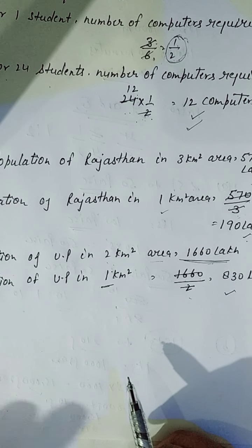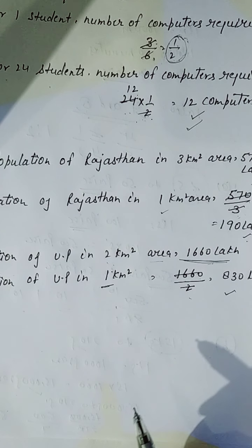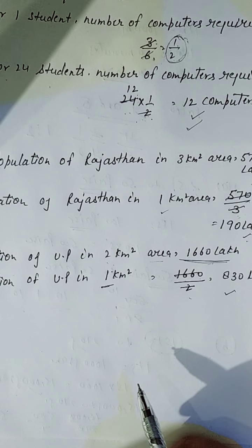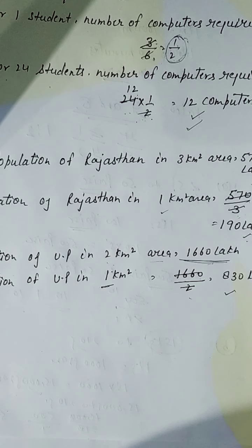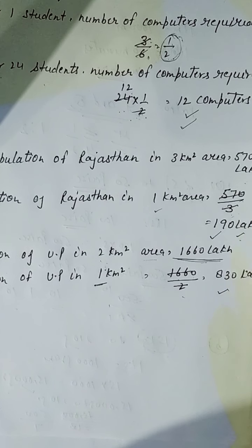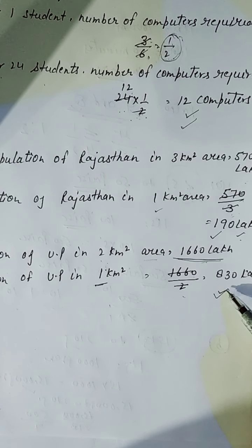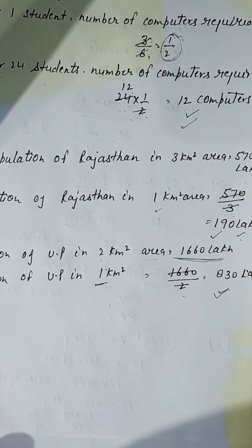Aap aata hai next, iska point kya tha? Which state is less populated? Aap sabse kam populated kaunsa hai? Dekhiye, aapke samne hi hai. Kis mein hai? Dekhiye, kilometer area jo hai. Rajasthan ka 190 hai. Aur UP kitna? 830 hai. So, less populated kaunsa hoonghe? Rajasthan. Rajasthan is the less populated.